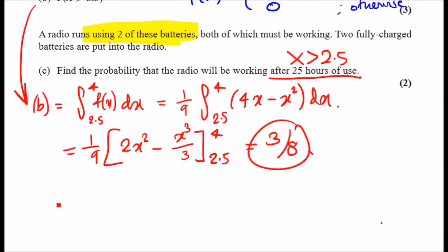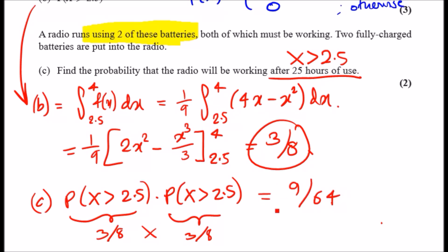Because we're using two batteries, the solution for part c means we need two of them: P(X > 2.5) times P(X > 2.5). We need both happening. We know the solution for both is 3/8, so multiplying them out, you should get 9/64. Very easy problem.